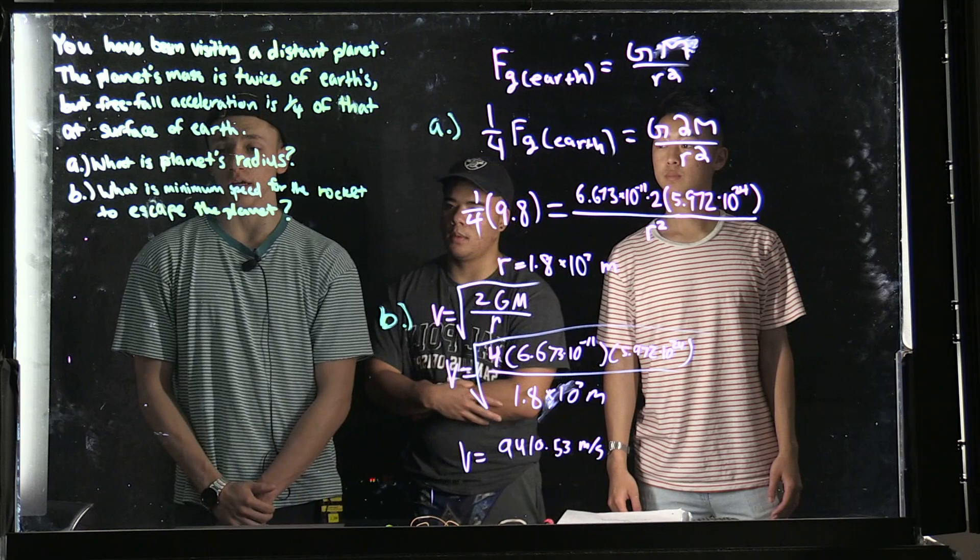Part A asks, what is the planet's radius? And Part B asks, what is the minimum speed for the rocket to escape the planet?